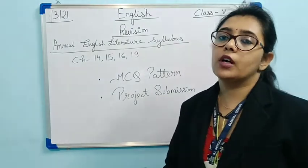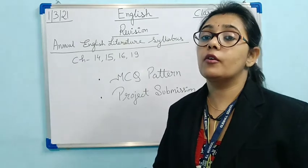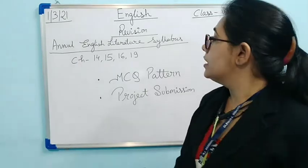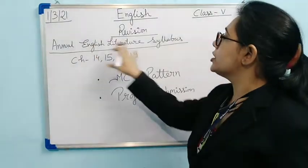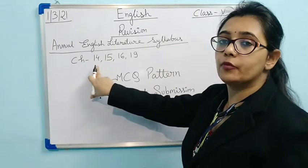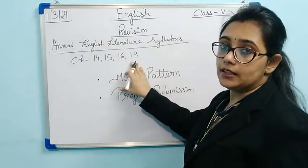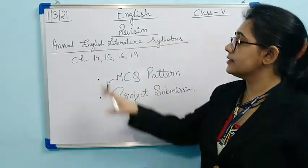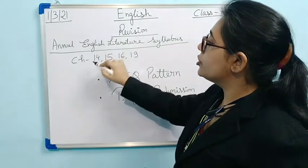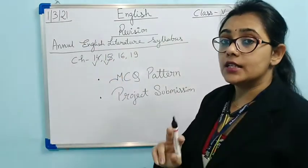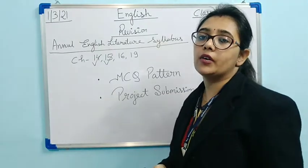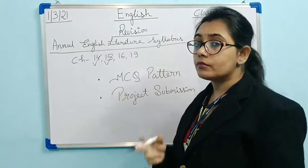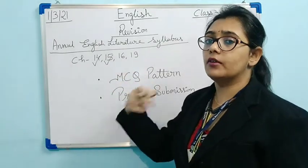In today's revision, we are going to do the revision of English literature — the chapters which are left. For your annual English literature syllabus, we have 4 chapters: chapter 14, 15, 16, and 19. In my previous revision video, we revised chapters 14 and 15. So revision of these 2 chapters is already done, plus one more revision regarding the word meanings of all 4 lessons together, which was another previous video.